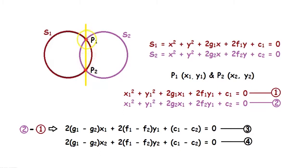Here P1 will satisfy the equation of both circles because it lies on both circles. So when we substitute the values of P1(x₁,y₁) into S1, we get x₁² + y₁² + 2g₁x₁ + 2f₁y₁ + c₁ = 0.